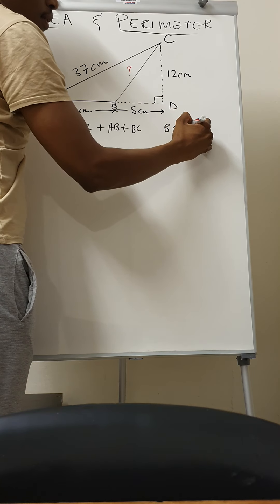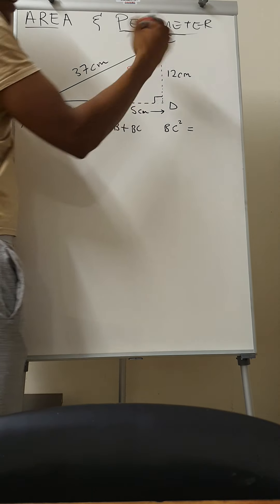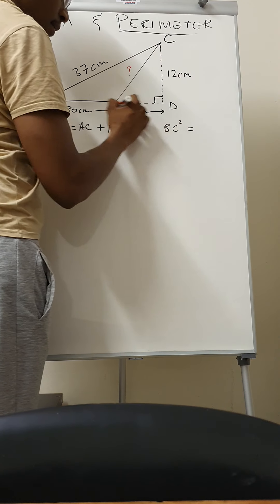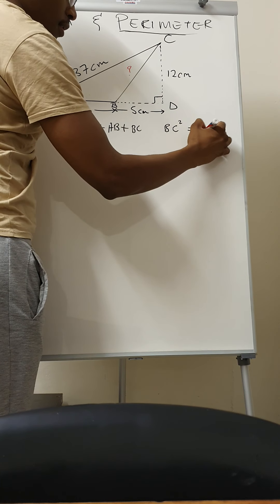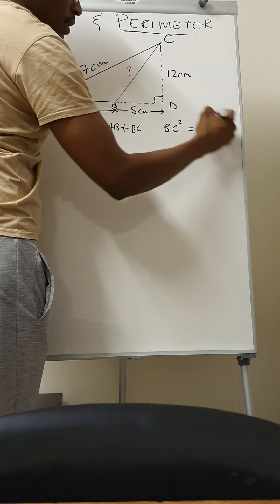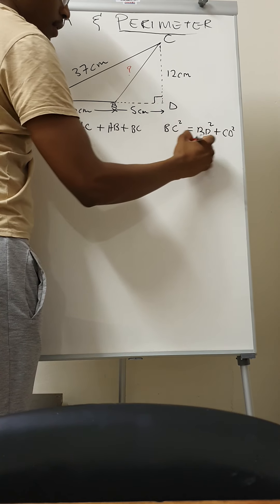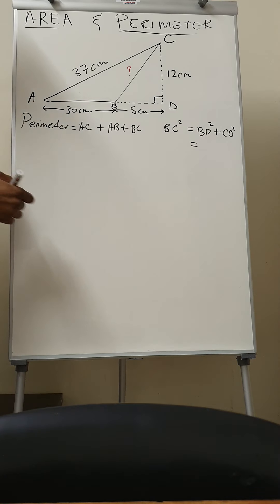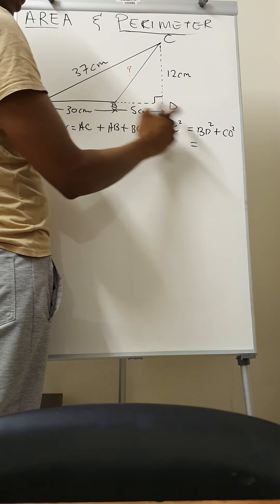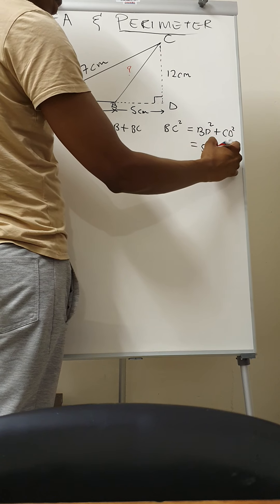So hypotenuse, which is BC in our case squared, is equal to the other two sides. You must square them: BD squared plus CD squared. So hypotenuse is the sum of the other two sides squared.